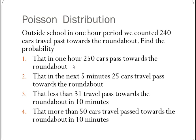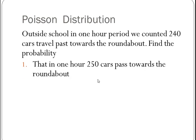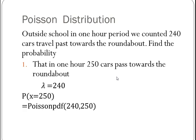It says, what is the probability that in one hour 250 cars travel past? So the first thing I'm going to work out is my lambda. Lambda is 240, so that's my average number, and it was in the question. So now I'm going to work out the probability that x equals 250, and that is going to be a Poisson PDF.